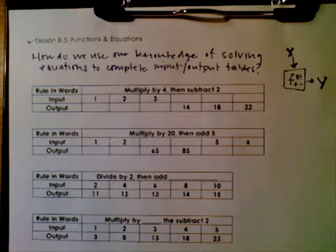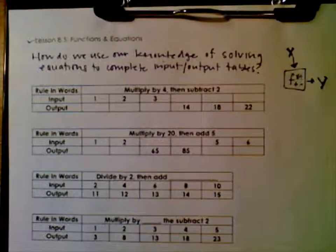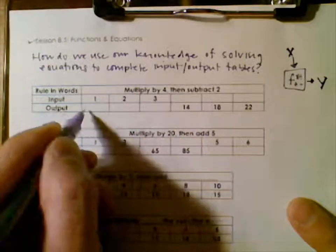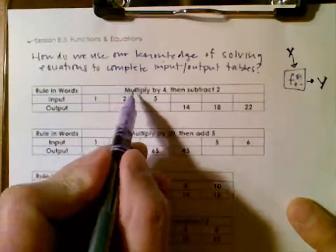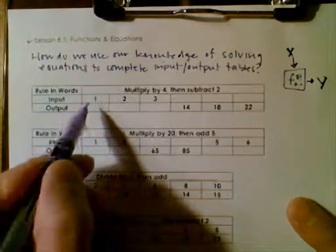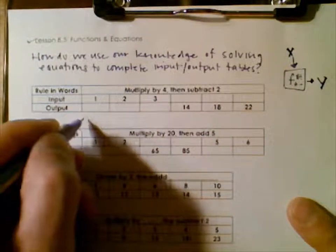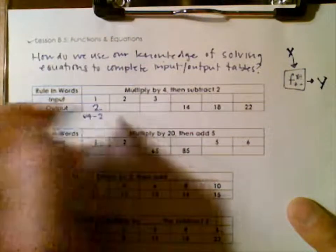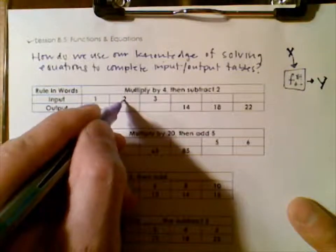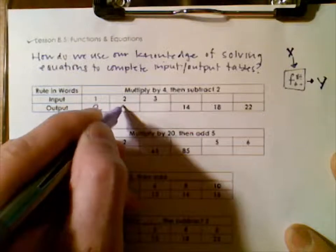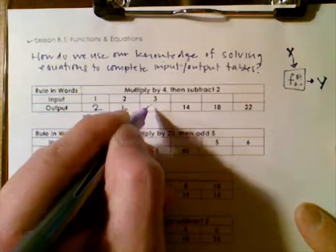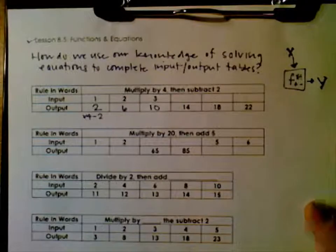Let's look at the first one. We have our input — numbers going in — and the output — numbers coming out. The rule is: multiply by 4, then subtract 2. So for input 1: 1 times 4 is 4, minus 2 is 2. Input 2: 2 times 4 is 8, minus 2 is 6. Input 3: 3 times 4 is 12, minus 2 is 10.